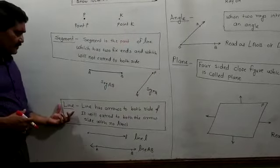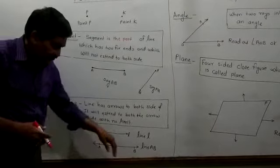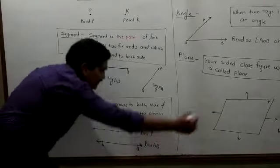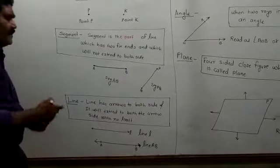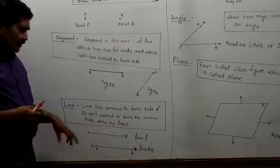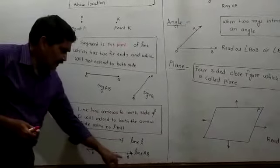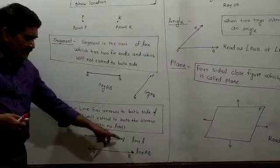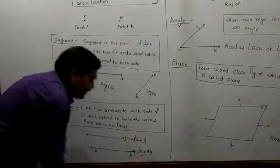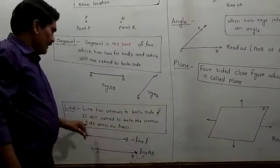Next, we come to the concept of a line. A line has arrows at both sides — this line continuously increases to both sides. If you want to read a line, you can read it by a single letter, or if two points are given, you say 'line AB' or 'line BA.' You will read this as 'line L,' and this line you will read as 'line AB.'